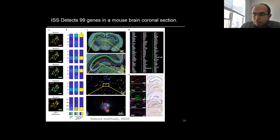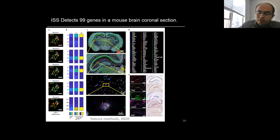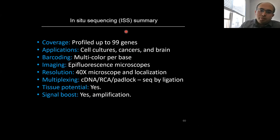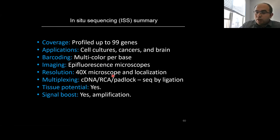More recently in 2020, in-situ sequencing was combined with single-cell RNA sequencing to look at brain slices for about 99 genes. Brain is one of the most studied tissues in spatial transcriptomics — partly due to many unknowns and robustness of mouse brain models — but the approach can be extended to other organs. ISS summary: up to 99 genes; works in cultures, cancer, and brain; multi-color per base; and because it's not single-molecule localization but tissue-level differences, even 20x or 40x microscope objectives can be used, since RCA and padlock designs produce very bright signals detectable at lower magnification.